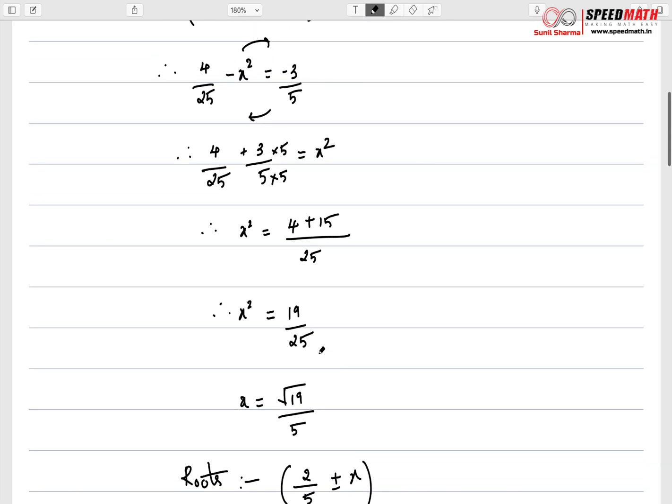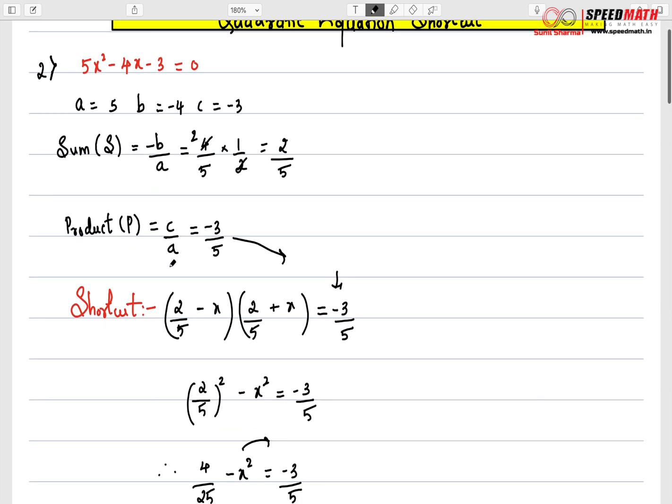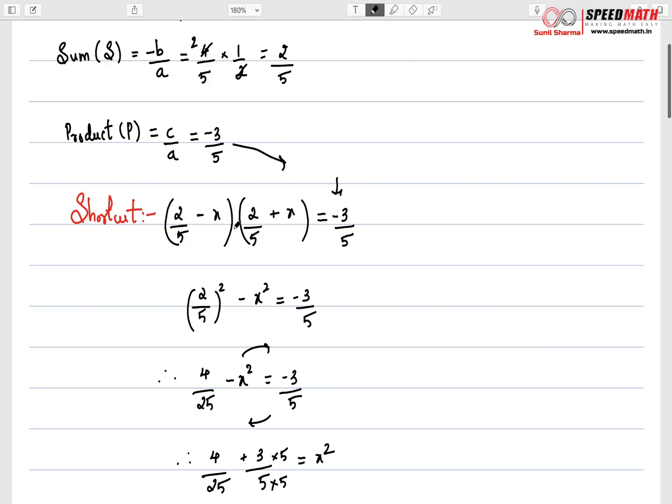Remember this shortcut technique is to be used in your competitive examination. This method may not be applicable because it is not approved in the textbook, but yes, this is the fastest method. You can solve any kind of equation. The calculation is very simple. Step one, just find out a, b, c, coefficients of x², x and constant. Find out sum, which is -b/a, find out product. And then shortcut is first term minus x, first term plus x equals to product. What is the first term? First term is simply whatever the sum, multiply by half and write it here and equal to the product. That's it.